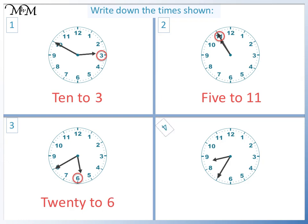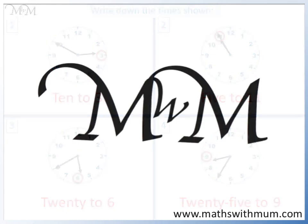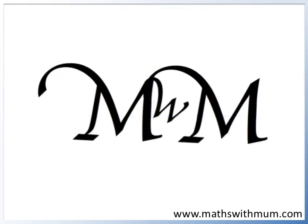Question 4: The minute hand is pointing to 7 — this is 25 minutes to. The hour hand is moving towards 9, so the time is 25 to 9. Thank you for watching. If you would like further practice, more questions are available on our website.